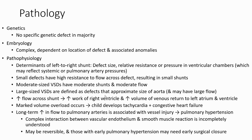VSD can be related to genetic causes, but no specific gene is identified in the majority. In hemodynamics, it can be complex depending on the location of the defect and associated cardiac anomalies. Pathophysiology is determined by blood flow and shunting, defect size, and relative resistance and pressure in the ventricular chambers. Small defects have high resistance to flow across the defect, resulting in a small shunt.